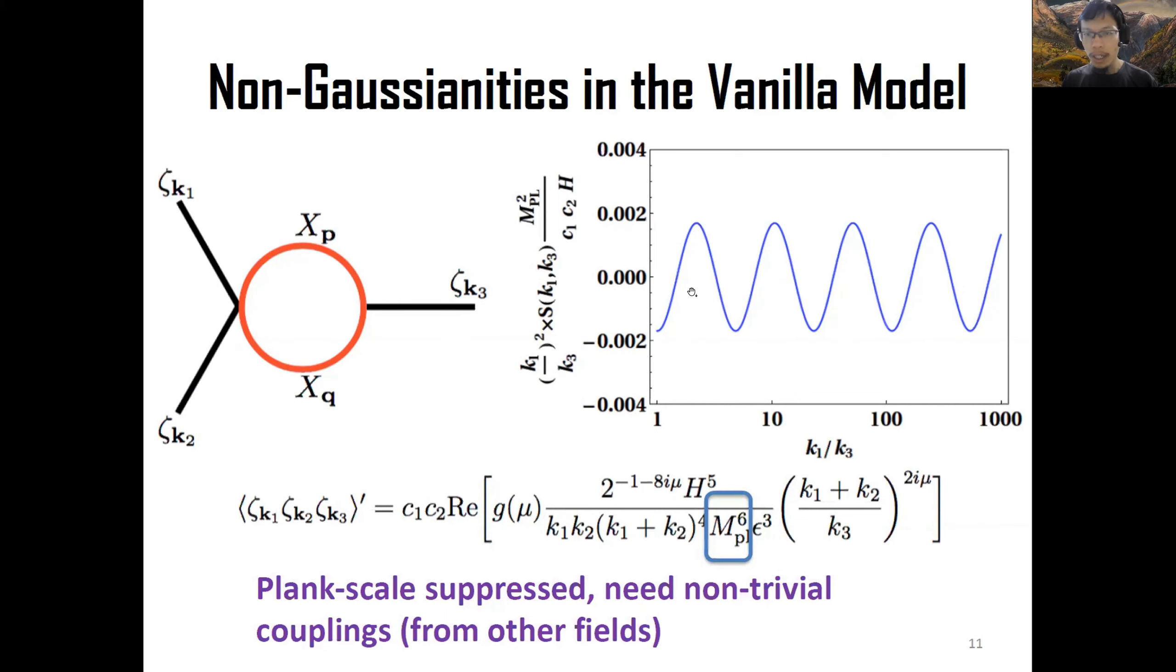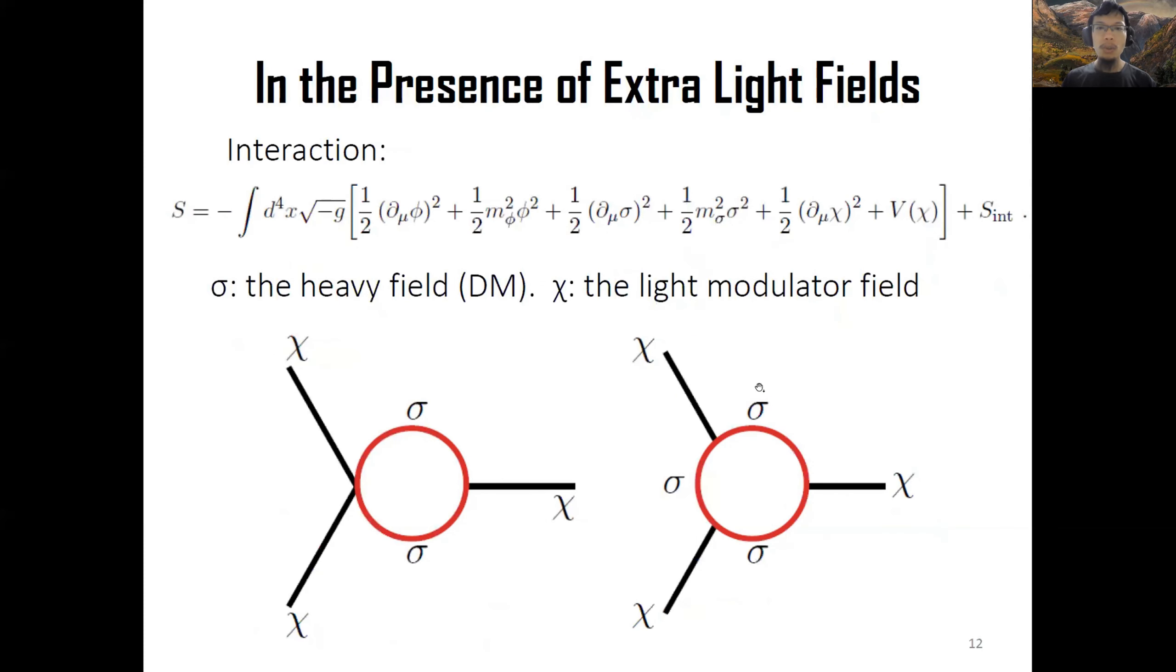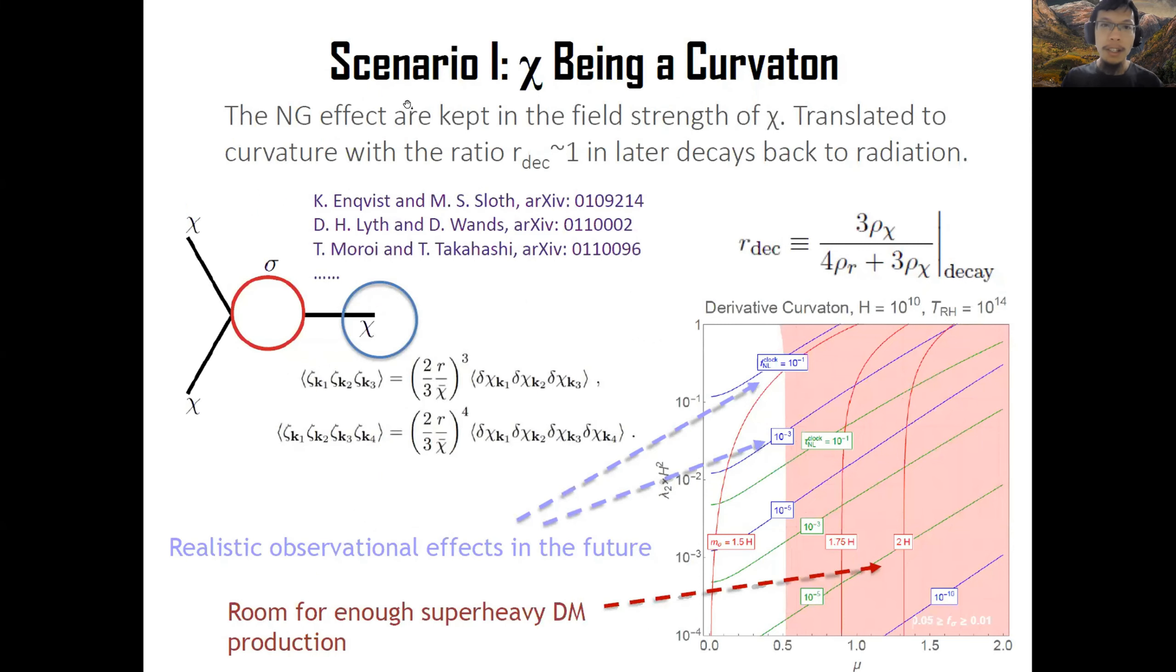You can see this oscillatory pattern, but unfortunately, in our original model, this is suppressed by so many powers of Planck scale. We need to introduce the interaction of these dark matter with a lot of light fields. Let me just summarize. There's two scenarios. I have two slides over. Anyways, it's the curvaton, that these dark fields eventually create some pattern. It memorizes the non-Gaussianity, and then rejects or decays back to the radiation.